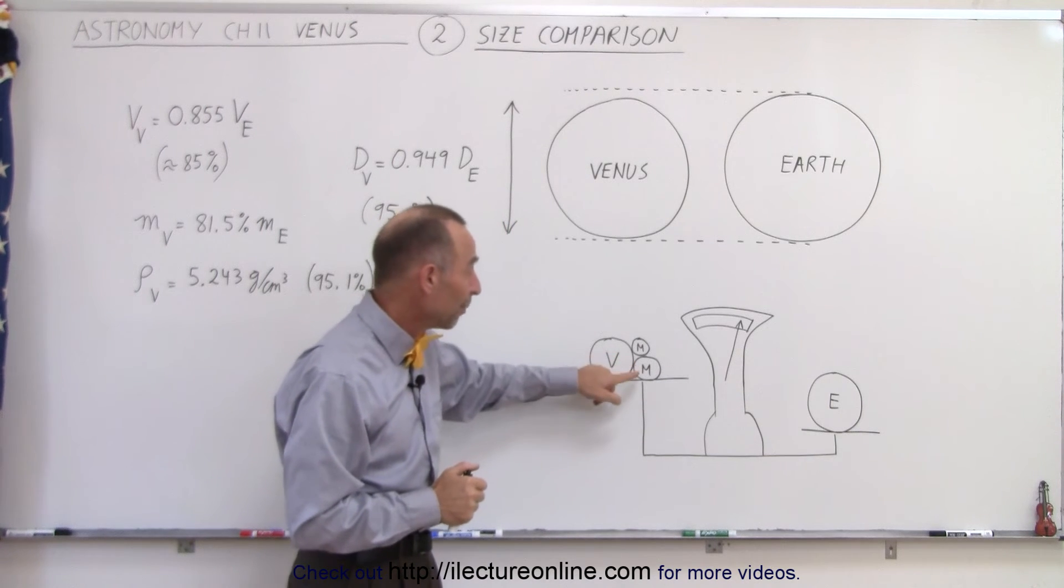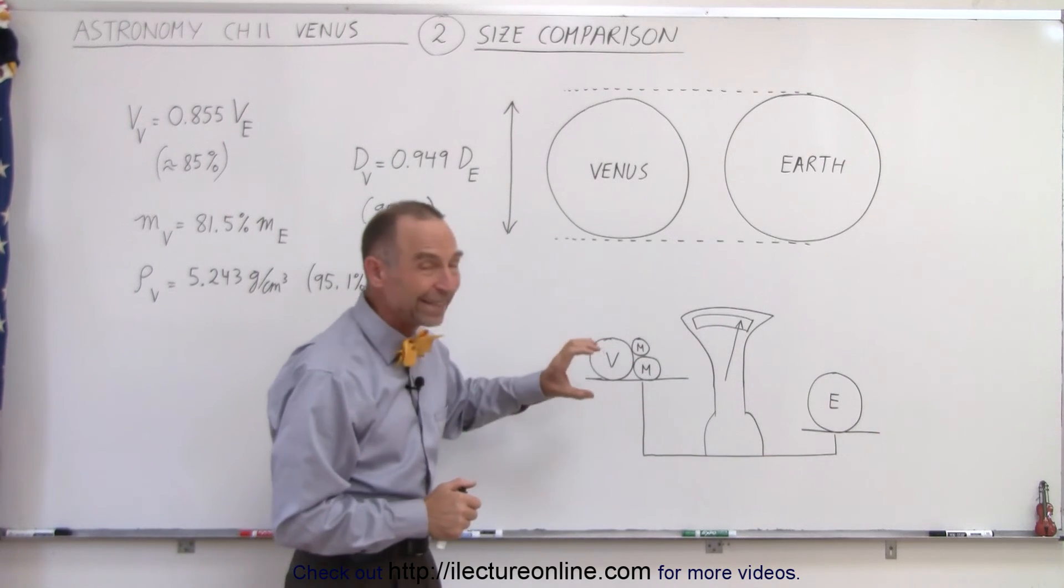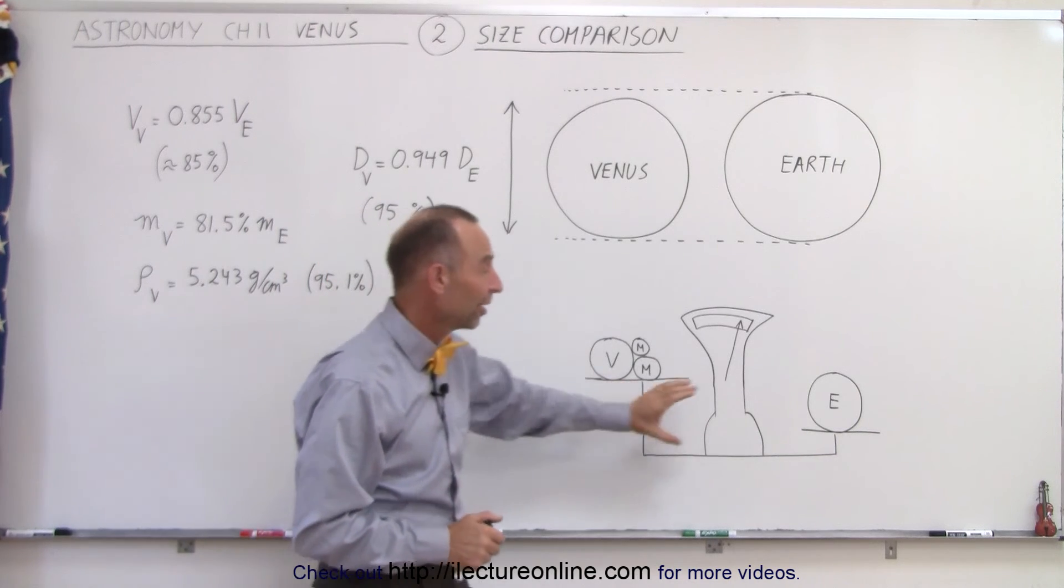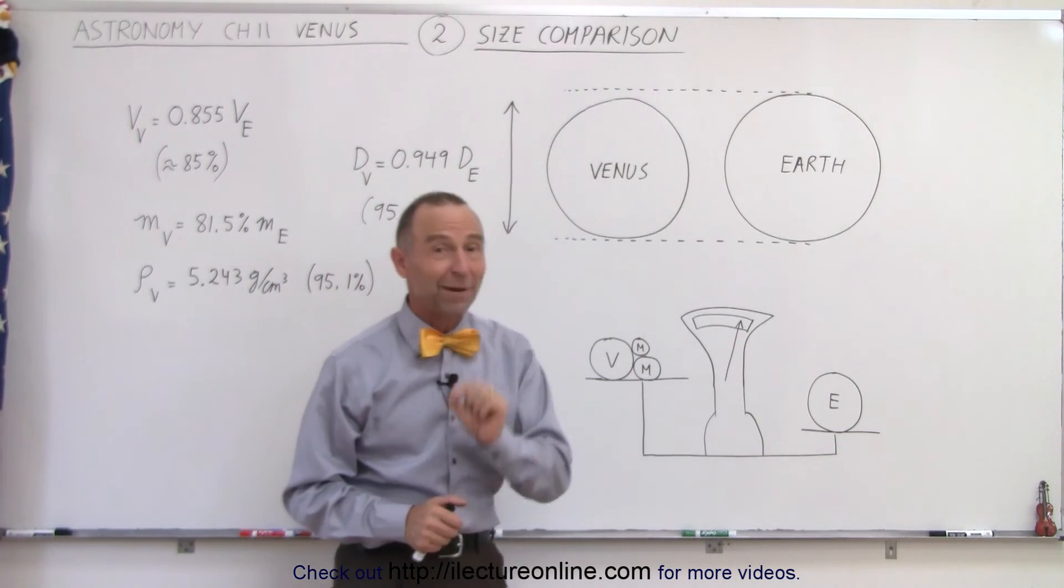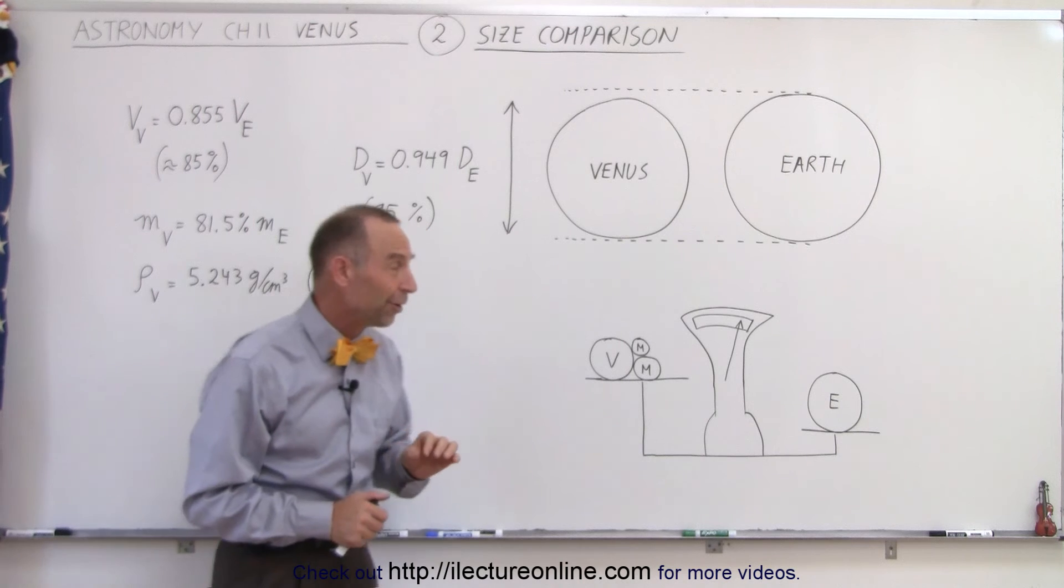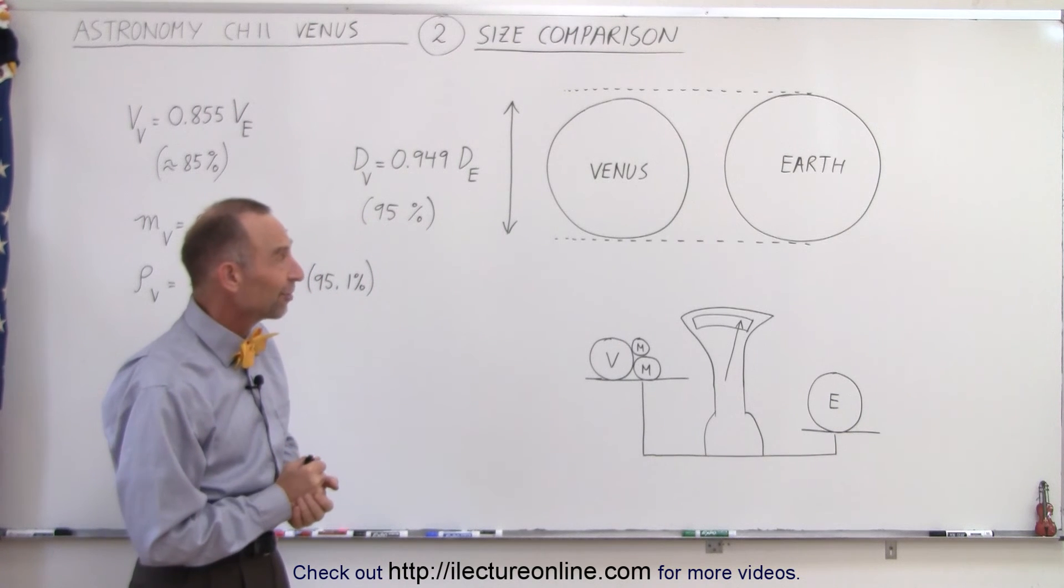So when you take Venus, Mars and Mercury together they do not have as much mass as Earth by itself. It's not by a lot, just one or two percent or so, but nevertheless another interesting fact.